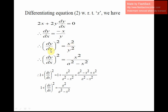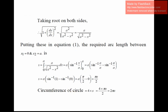To express in terms of x only, we replace y² with a² − x². So (dy/dx)² = x²/(a² − x²). Adding 1 to both sides: 1 + (dy/dx)² = 1 + x²/(a² − x²) = (a² − x² + x²)/(a² − x²) = a²/(a² − x²). Taking the square root on both sides gives √(1 + (dy/dx)²) = a/√(a² − x²).